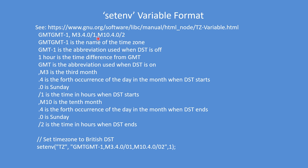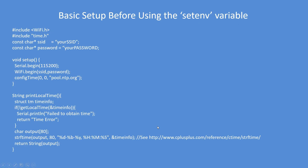Daylight saving turns off on the tenth month, on the fourth occurrence of day zero — which is Sunday — at 0200 hours. It's quite mind-bending to define these variables, but once you know how to do it, it's quite straightforward. That's the string that has to be used to set the time zone environment variable.